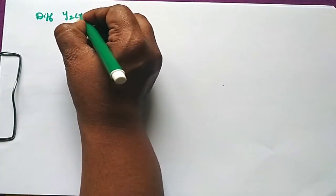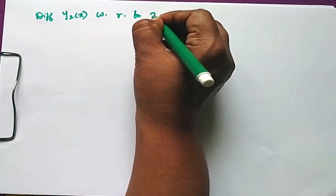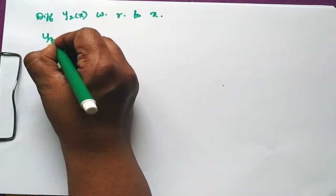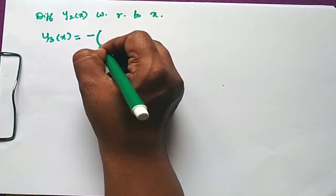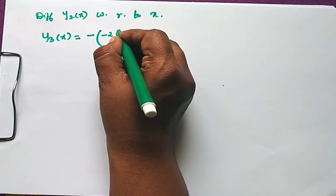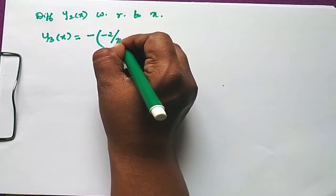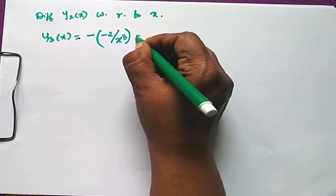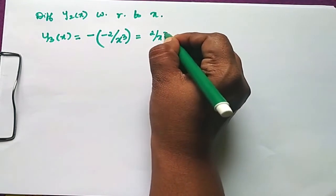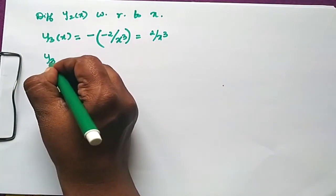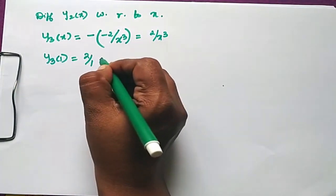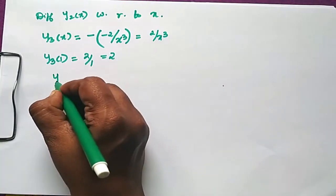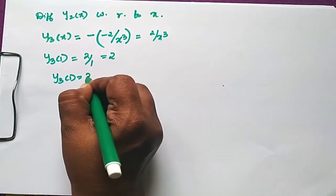Differentiating y₂(x) with respect to x gives y₃(x) = 2/x³. Therefore y₃(1) = 2.